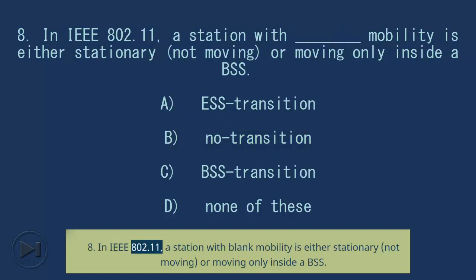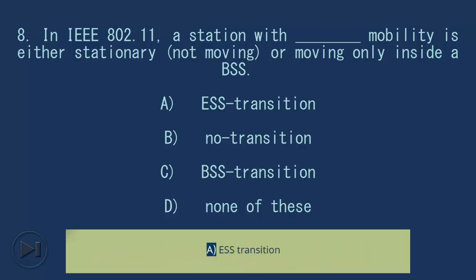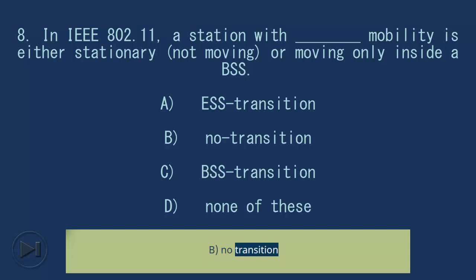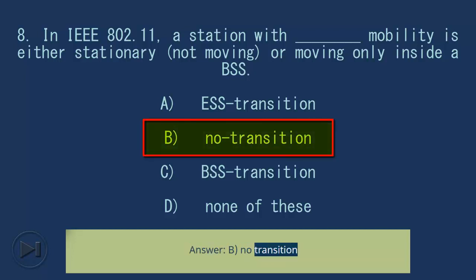Question 8: In IEEE 802.11, a station with blank mobility is either stationary (not moving) or moving only inside a BSS. A. ESS Transition, B. No Transition, C. BSS Transition, D. None of these. Answer: B. No Transition.